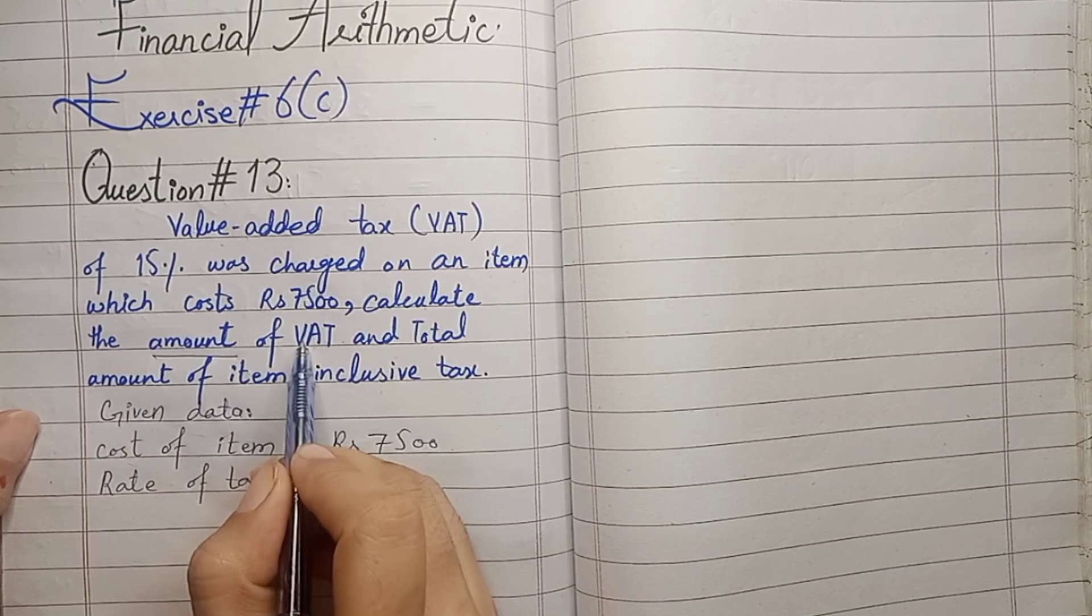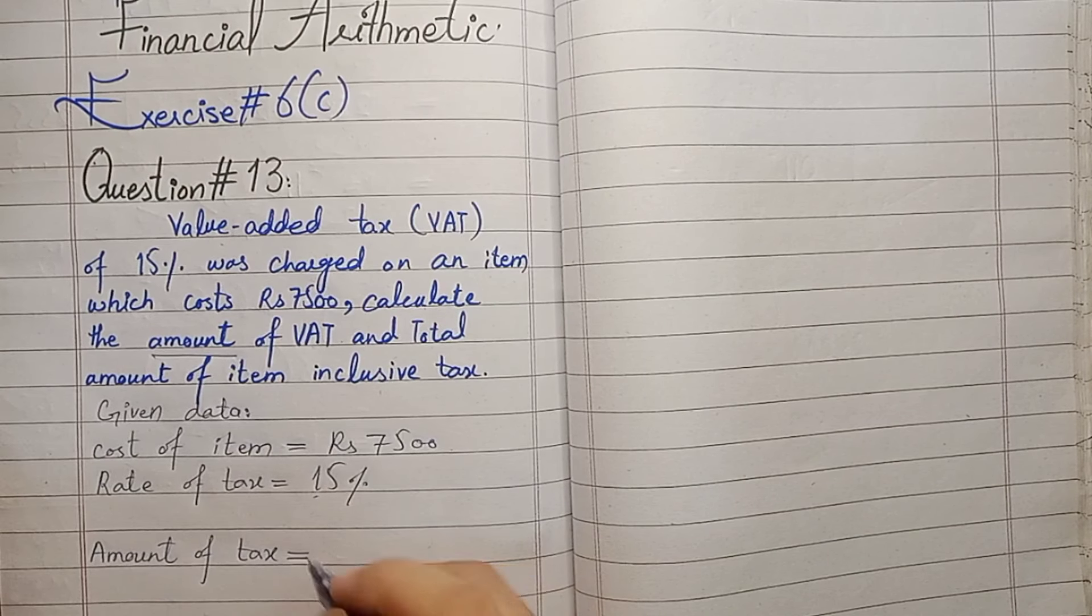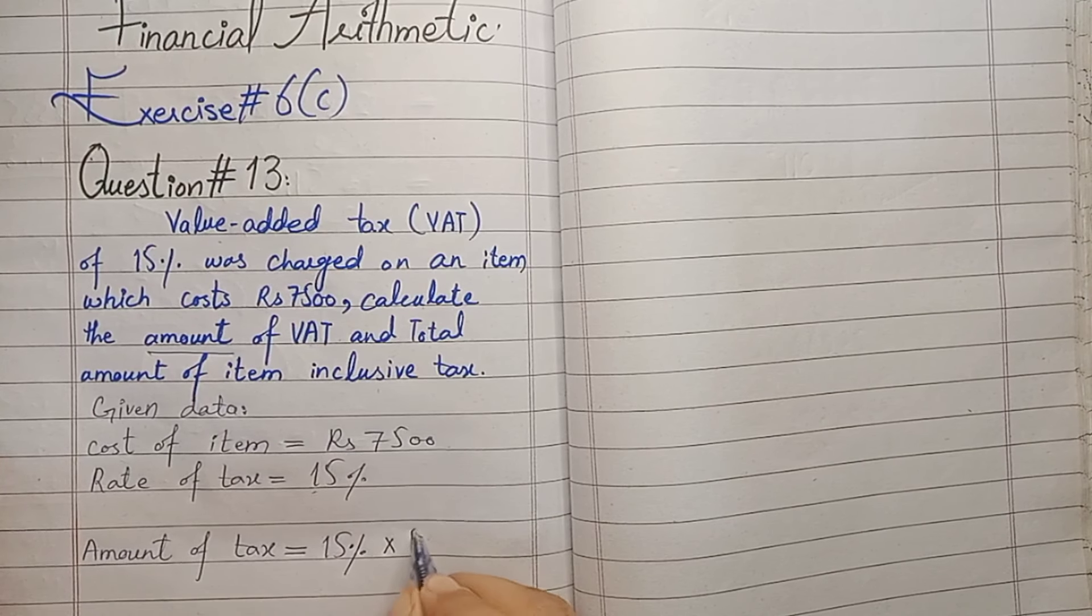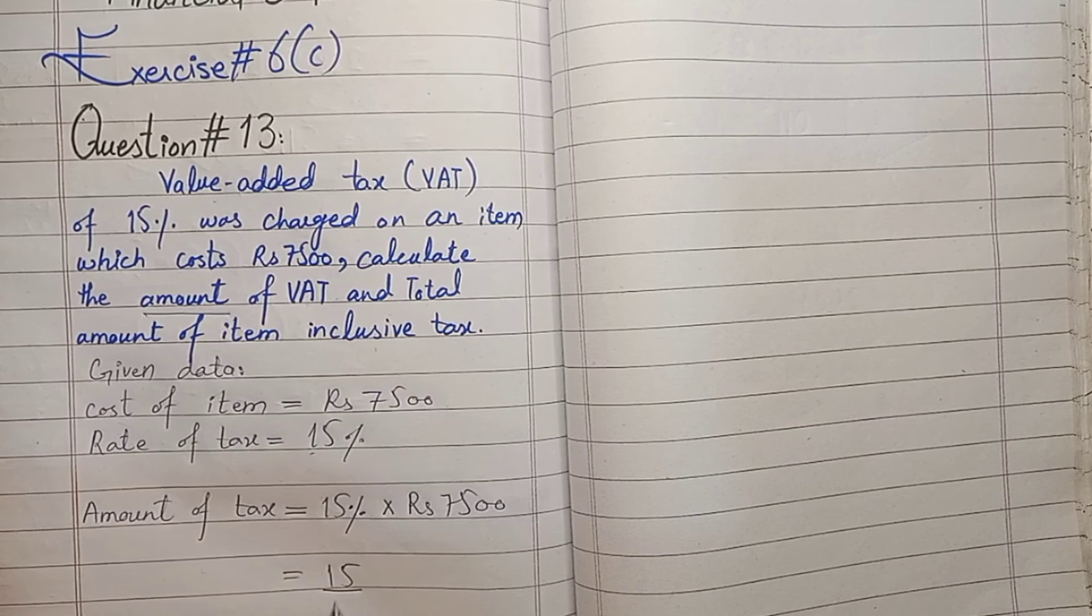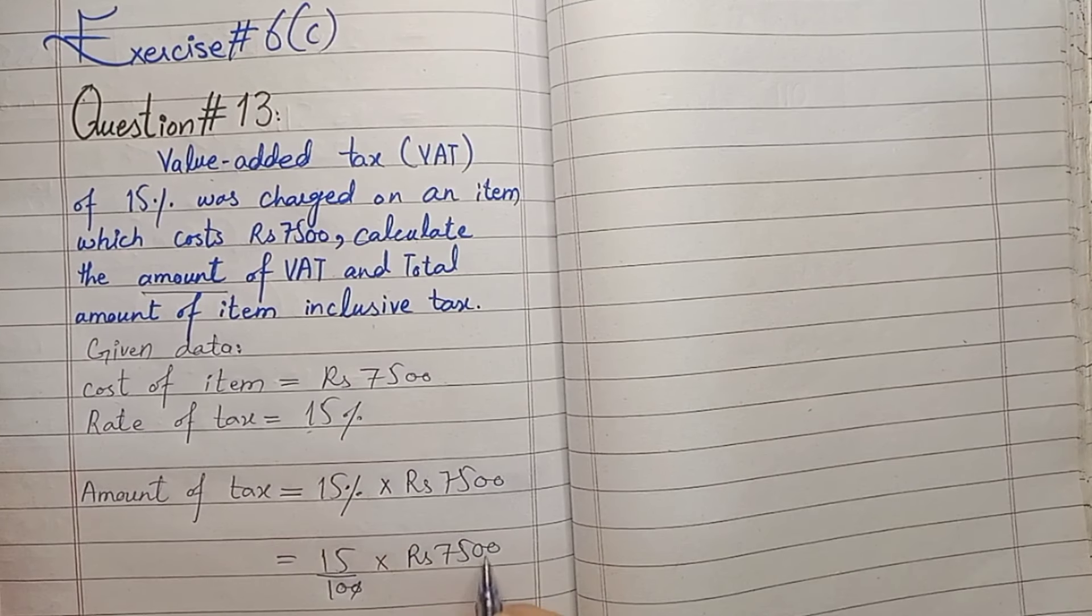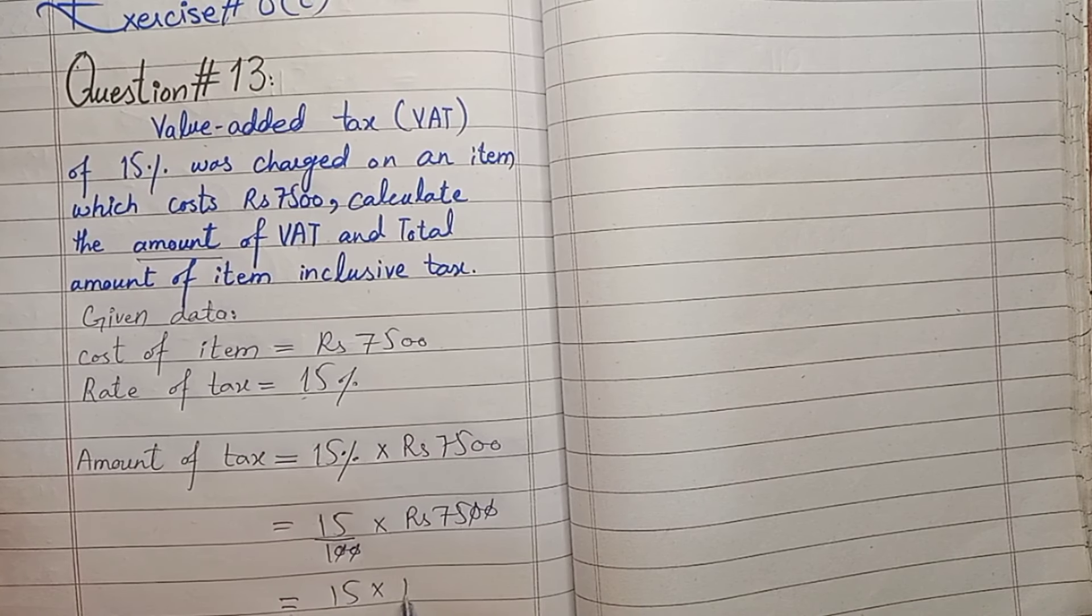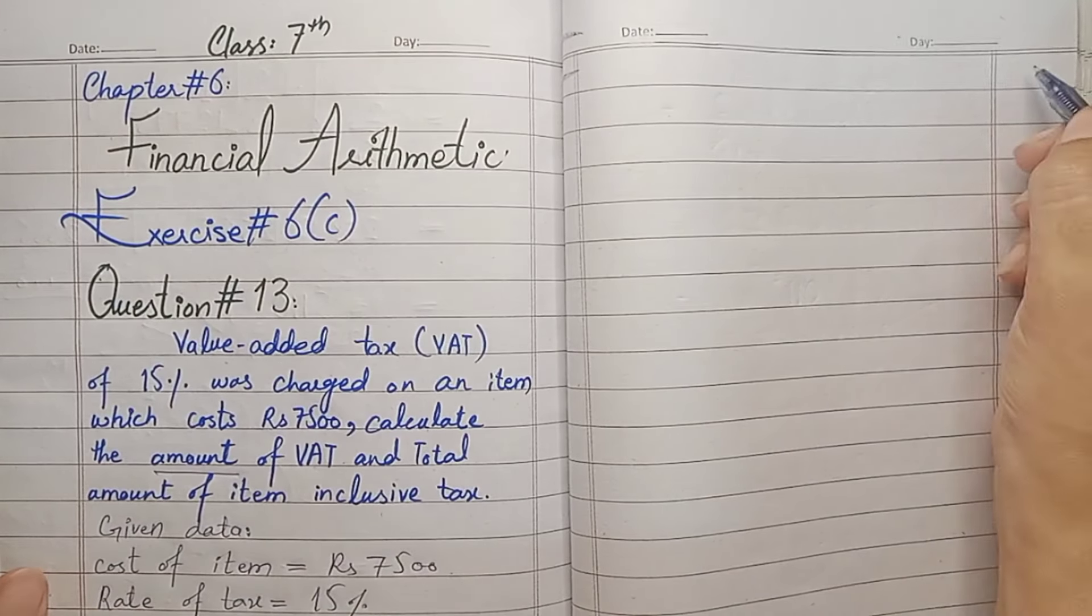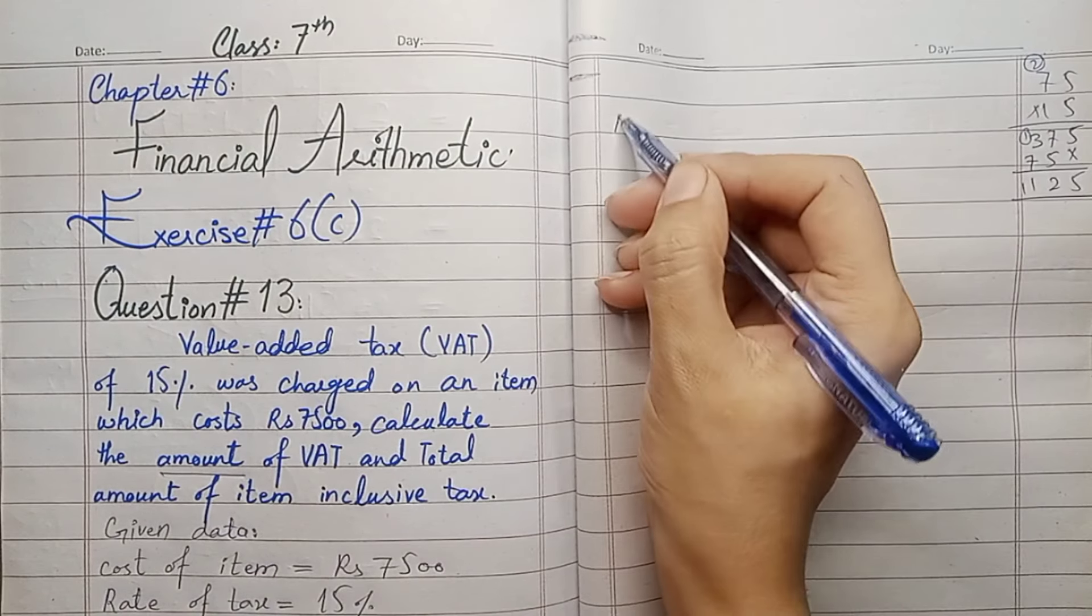We have to find the amount of Value Added Tax. For the amount of tax, what is the amount? We calculate 15% of 7,500. Now we cancel the zeroes. We have 15 multiplied by 75. We multiply it so that we can find the amount of tax. 75 multiplied by 15 equals Rs. 1,125. Now we have the amount of tax.